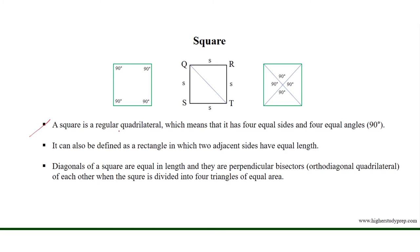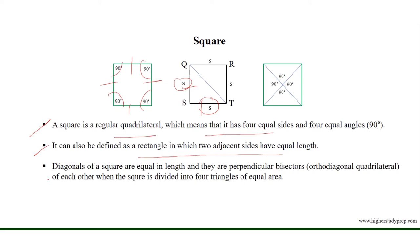A square is a regular quadrilateral, which means it has four equal sides and four equal angles of 90 degrees. It can also be defined as a rectangle in which two adjacent sides have the same equal length.